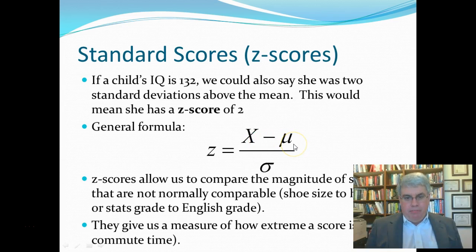Then, minus the population mean, so the population mean of IQ is 100. So, this top would be 132 minus 100, the total of 32, divide by the standard deviation. And we said that the standard deviation in this measure of IQ is 16, so we'd have 32 divided by 16, and that equals 2. So, it's two standard deviations above the mean.